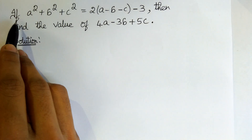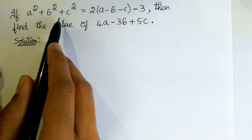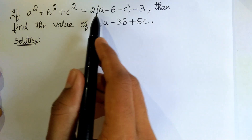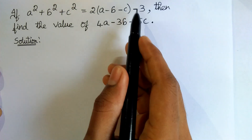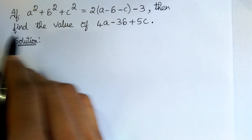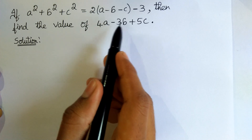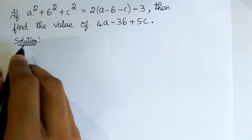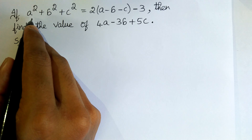The question is: if a² + b² + c² = 2(a - b - c) - 3, then find the value of 4a - 3b + 5c. Now let us simplify this equation.